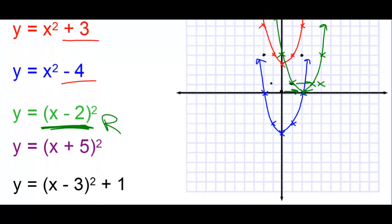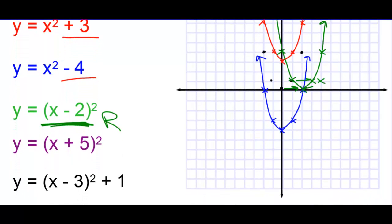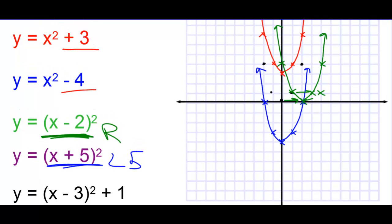Then we have x plus 5 on the inside. This would be left 5 units. You've got to think backwards on the inside. So we're going to take those original points and move them left 5. So here is the new parabola shifted left 5 from the original.